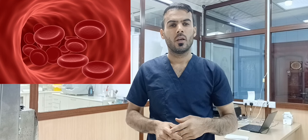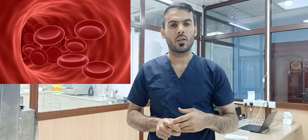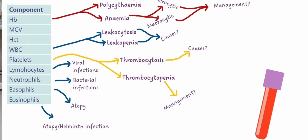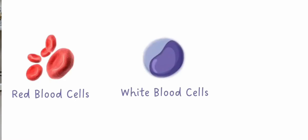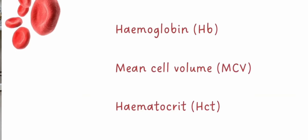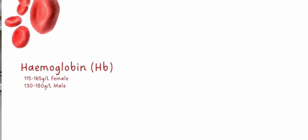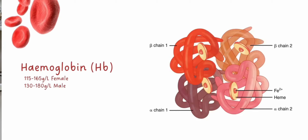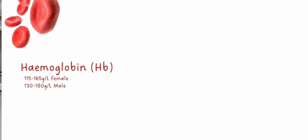And the secondary policy system. If we have RBC and WBC, we have a lot of polycythemia.